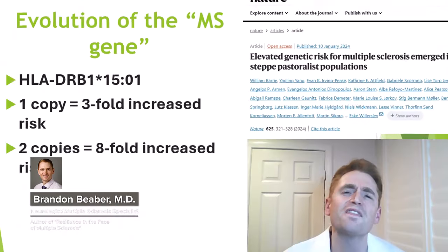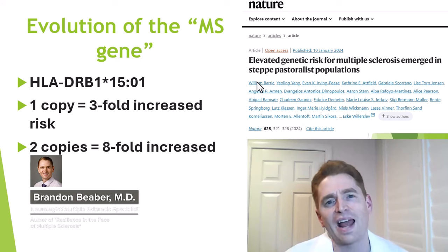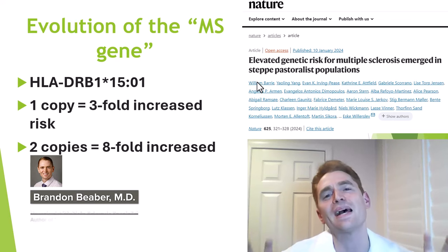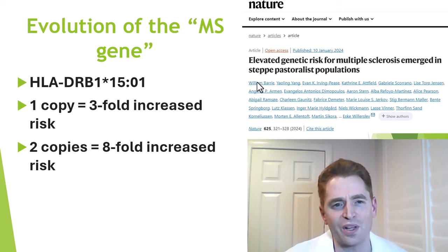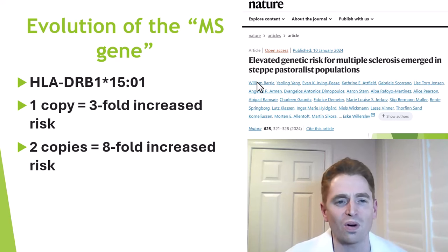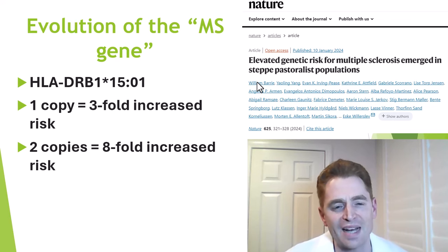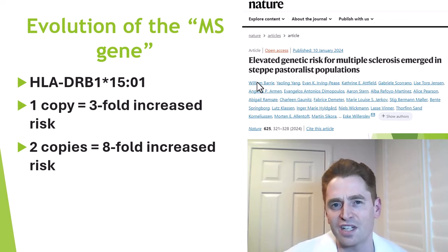Someone on Twitter asked me to make a video about this fascinating article published in Nature on evolution of the so-called MS gene — the gene most associated with your risk of getting MS: HLA-DRB1*1501. If you have one copy of this allele, you have a three-fold increased risk of MS. If you have two copies, you have an eight-fold increased risk of MS.